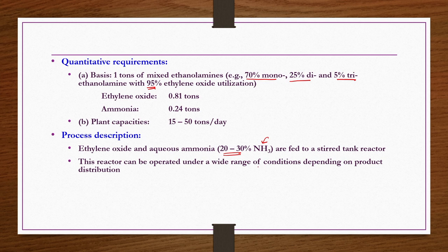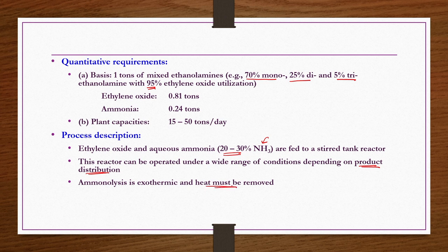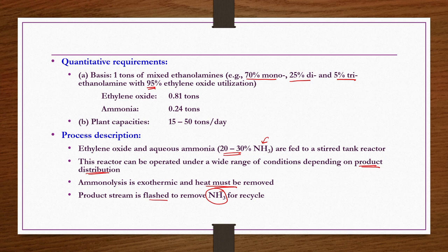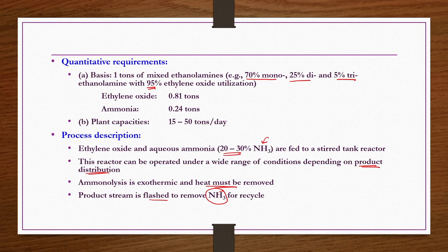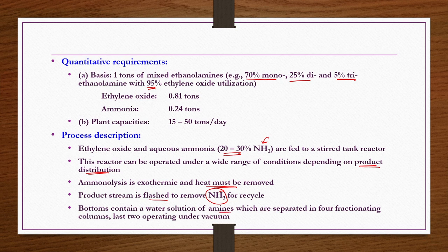The reactor can be operated over a wide range of conditions depending on the required product distribution — whether more mono, di, or triethanolamine is needed. The product stream is flashed to recover unreacted ammonia for recycle, since ammonia conversion is difficult and incomplete. The bottoms contain a water solution of amines which are separated in fractionating columns, the last operating under vacuum.